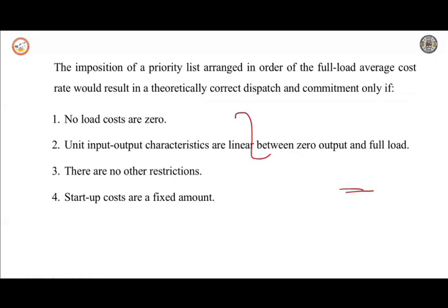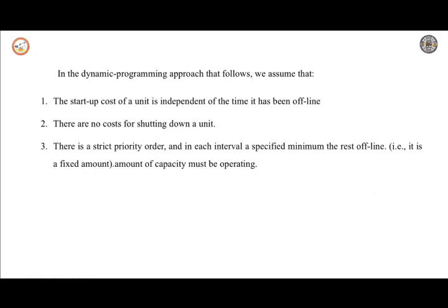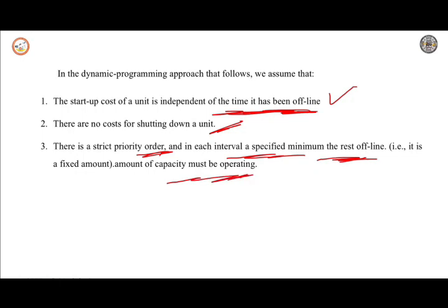In this method, there are a few assumptions, in addition to those made in the priority list method. The first assumption is the startup cost of a unit is independent of the time it has been offline. The second point is there are no costs for shutting down a unit. Third, there is a strict priority order, and in each interval a specified minimum amount of capacity must be operating.